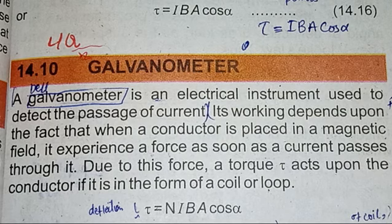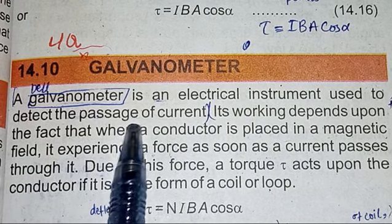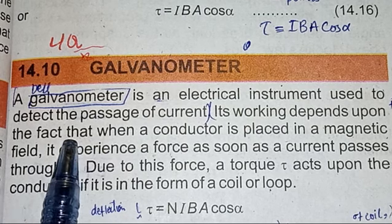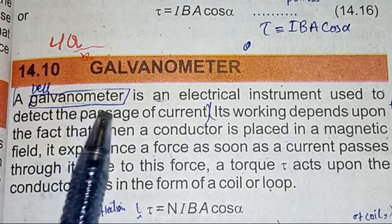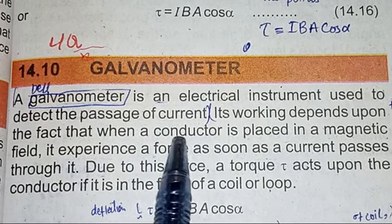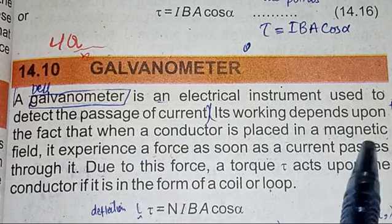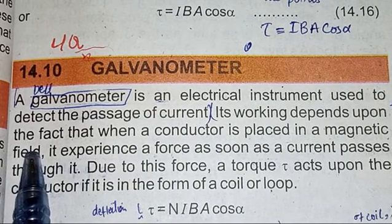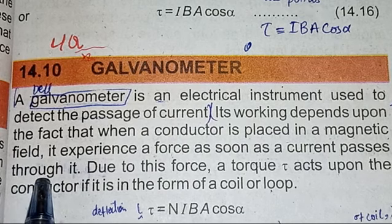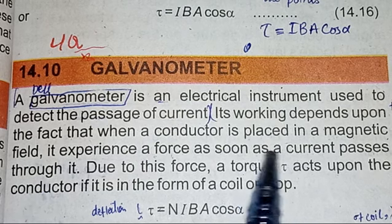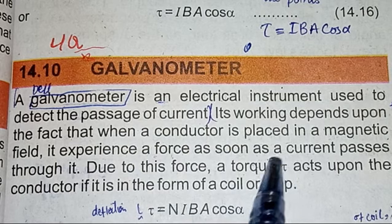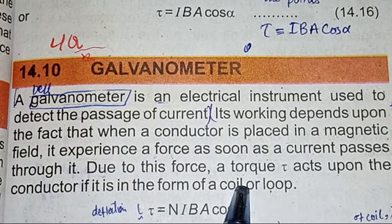As we learned in the last lecture, when current is passing through a conductor in the presence of a magnetic field, the conductor experiences a force. The working principle of the galvanometer depends upon the fact that when a conductor — any material through which electricity can pass easily — is placed in a magnetic field, it will experience a force as long as the current passes through it. Due to this force, a torque acts upon the conductor if it is in the form of a coil or a loop. The turning effect is known as torque.